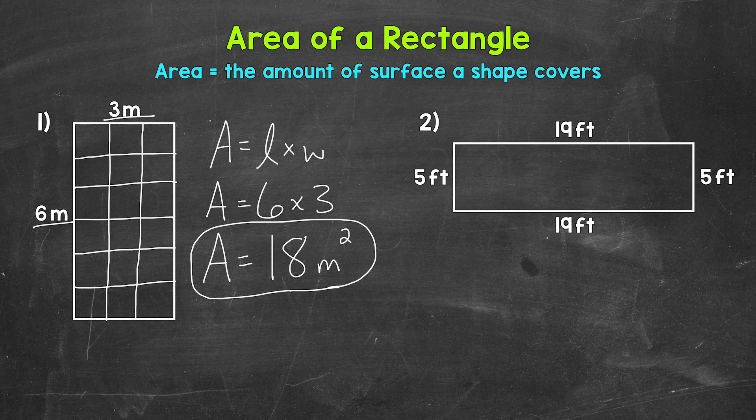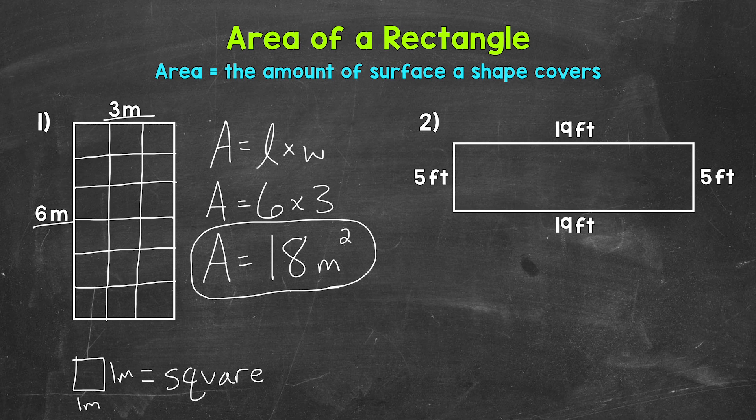You'll notice that we have squares now. These are square units. And specifically for number 1, those are square meters. That just means that each square is 1 meter by 1 meter. And this is a square meter.